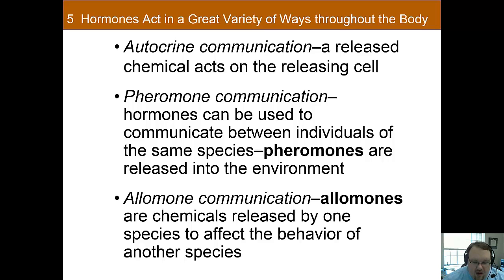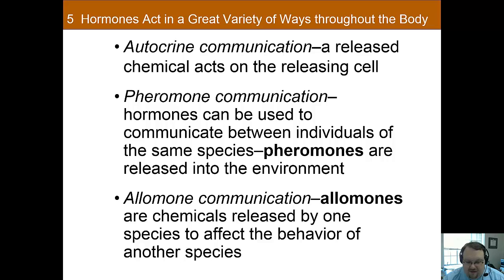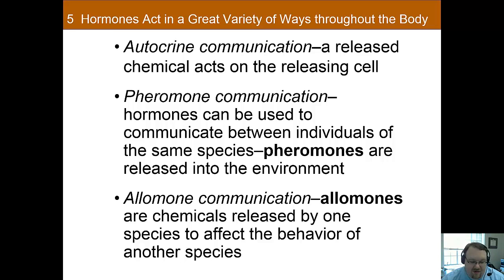There's also pheromone communication. Pheromones are chemical signals released outside one's body that are meant to affect members of the same species — a dog urinating to mark its territory is a good example. There are also alomones. Alomone communication is when a chemical released by one species is meant to affect the behavior of another species. A skunk spraying a horribly smelling spray to keep you away is a great example of an alomone — a chemical release meant to affect the behavior of other species.